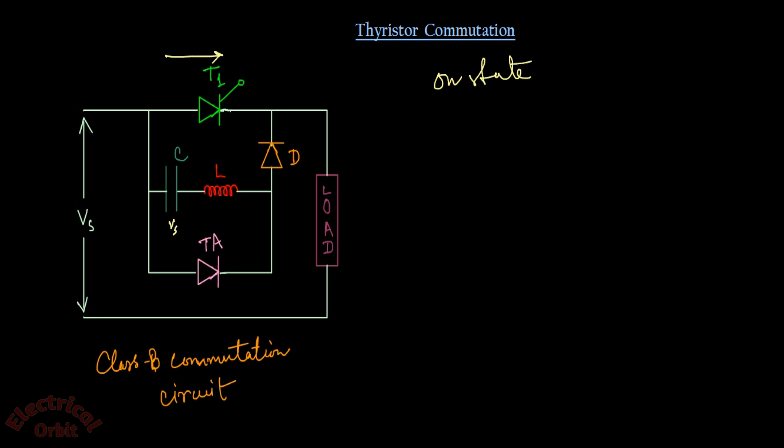First, assume that thyristor T1 is in the on state — that means current is flowing through T1. During this time the capacitor is charged to the VS value, being positive at one terminal and negative at the other, because current is passing through this path.